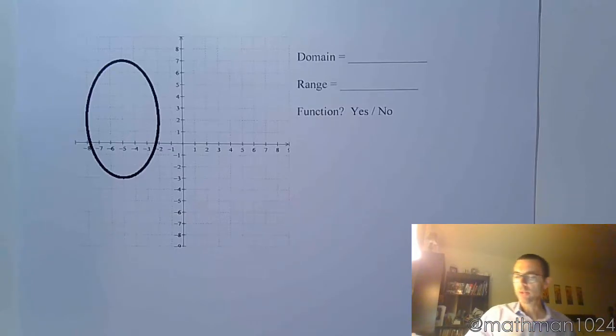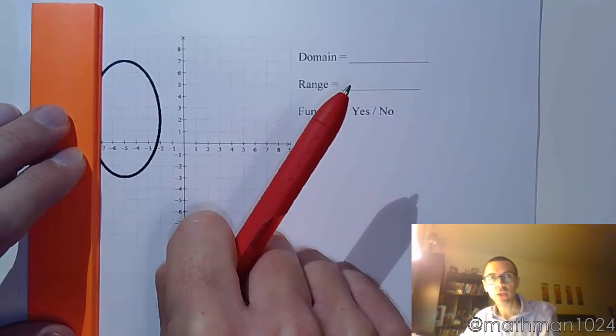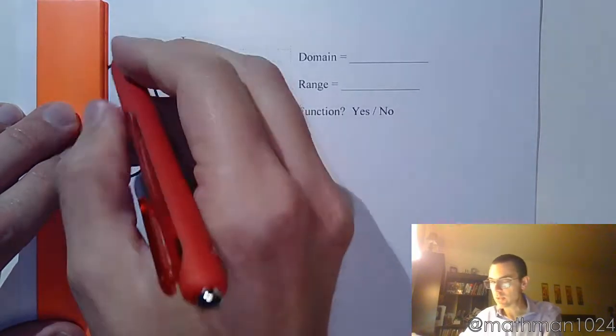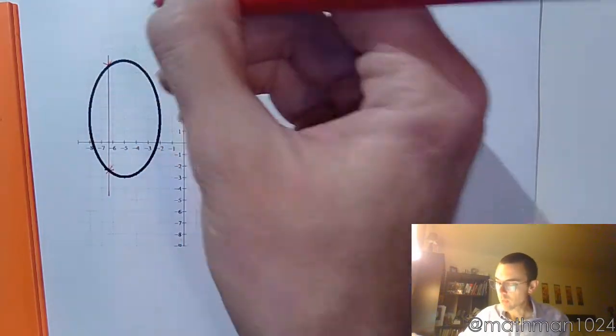So let's look here. This first example - I hope that you can see that this is not going to be a function. Why not? Well, if I slide my vertical line through here, you see that very quickly you are hitting this in more than two spots. So this guy is going to fail that vertical line test. This guy is not a function.